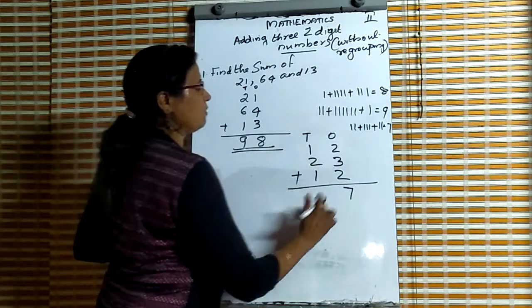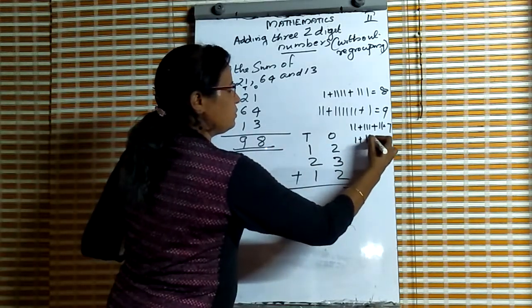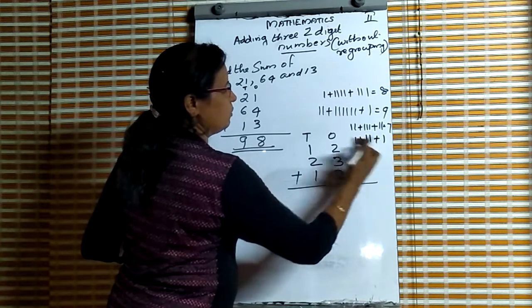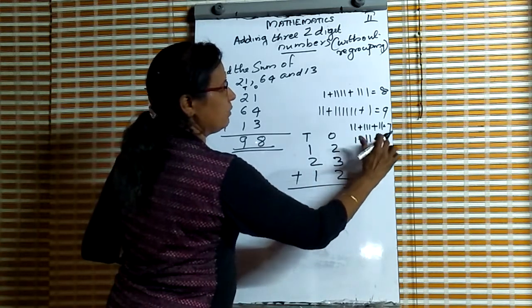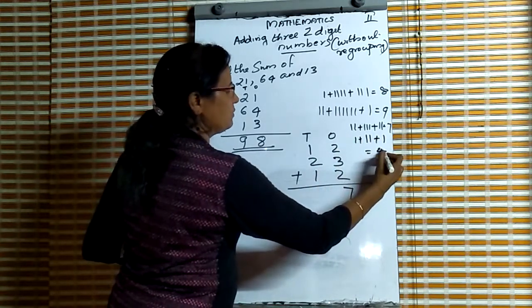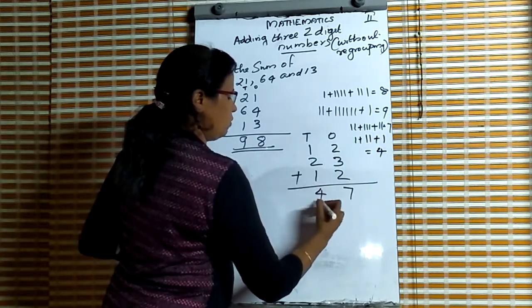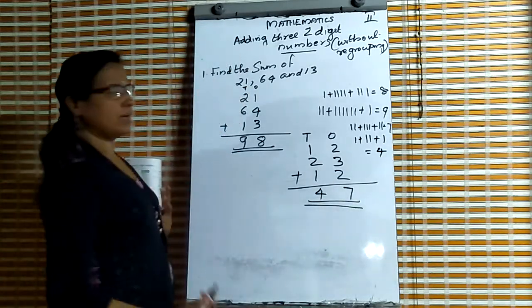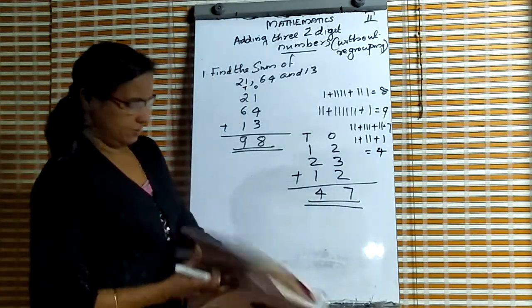Then, in the tens place: 1 plus 2 plus 1 is equal to 4. So the answer is 47. Our answer is 47.